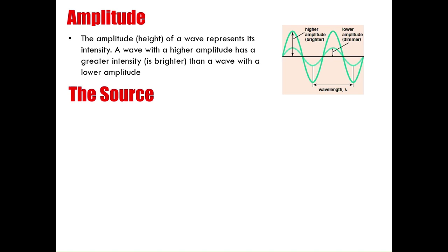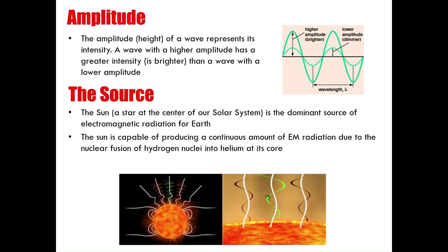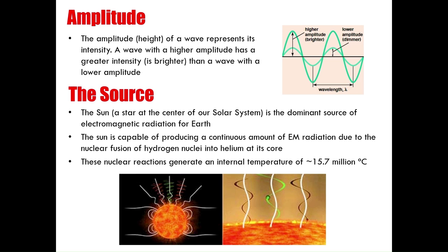What is the source of electromagnetic radiation? In our solar system, the source is, of course, the Sun — it is a star, and the dominant producer of electromagnetic radiation for Earth. The Sun is capable of producing a continuous amount of electromagnetic radiation due to nuclear fusion of hydrogen nuclei into helium. The temperature required to make a full spectrum of electromagnetic radiation is approximately 15.7 million degrees, giving us almost the entirety of the electromagnetic spectrum.